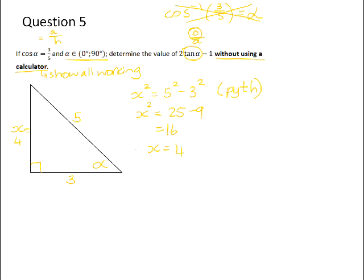and if we square root both sides, we get x to be 4. So now that we know that this side is 4 units long, we can now work out the value of 2 tan alpha minus 1. 2 tan alpha will be 2 times the tan of alpha, which is opposite over adjacent, minus 1. That gives you 8 over 3 minus 1, which is 8 over 3 minus 3 over 3, and your final answer is 5 over 3.